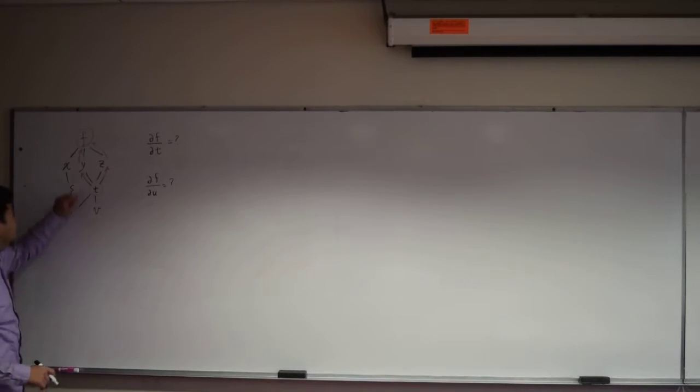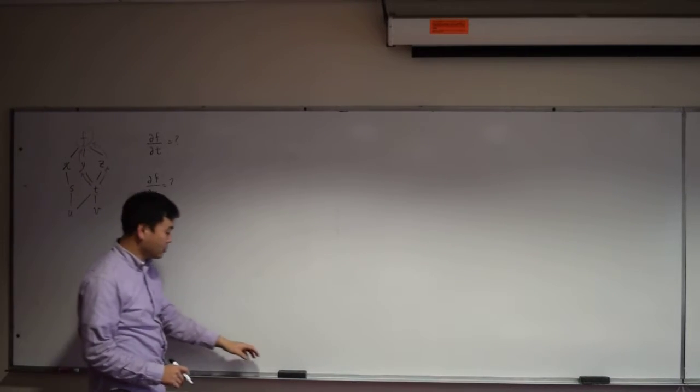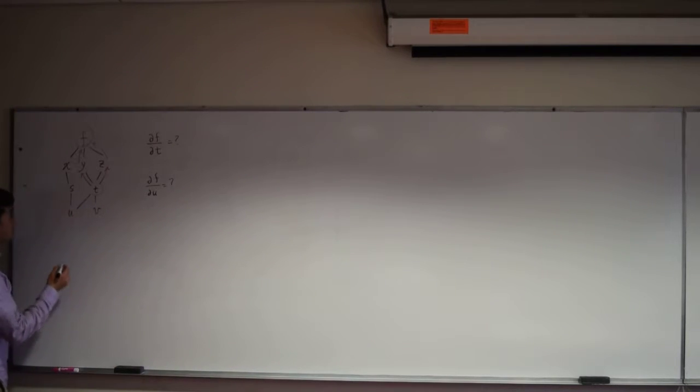So you have to figure out what this quantity is, what this quantity is, and then add them together. That's what the chain rule is. Let's work one by one. First, how do you calculate this?